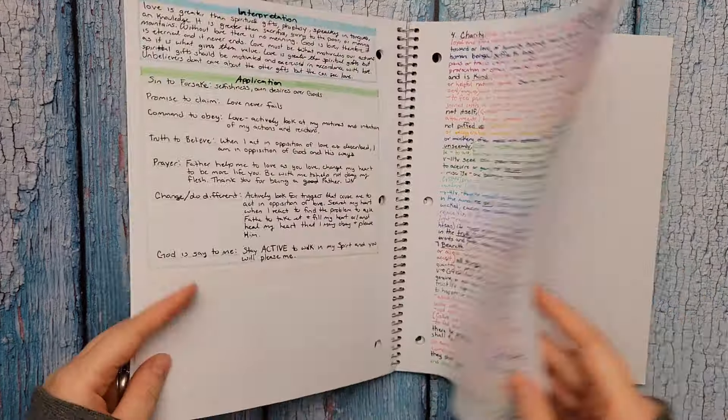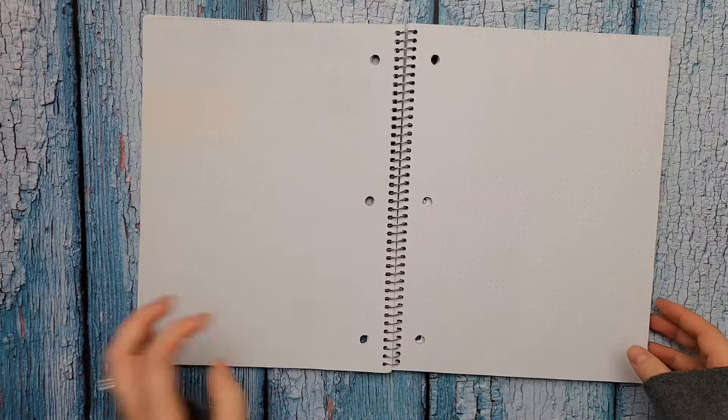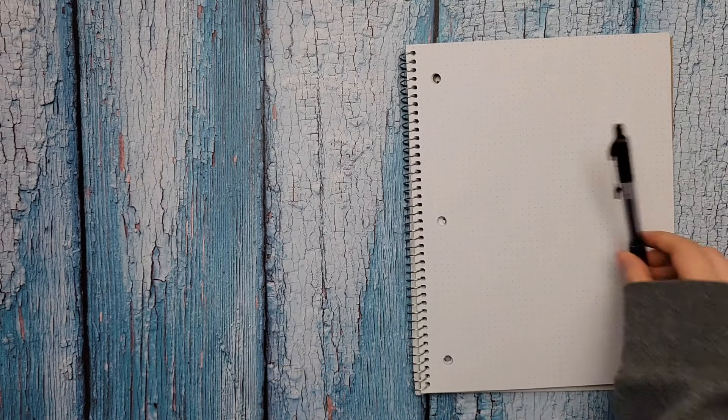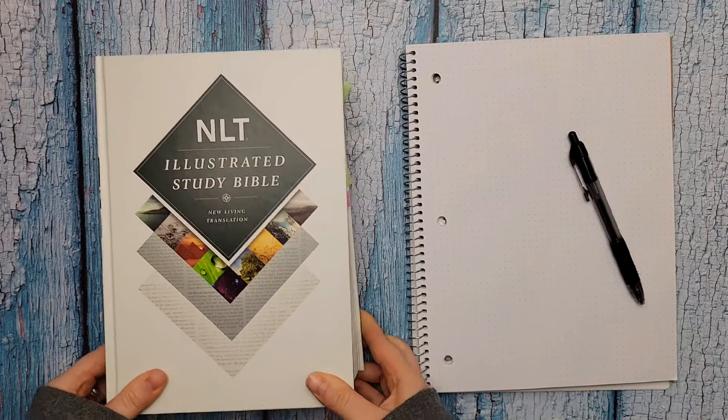Welcome, I'm the Word Nerd and in this video we are going to do a topical study for beginners. What you're going to need is some paper. So I have this dot grid notebook paper that I got from Walmart for a couple of bucks.